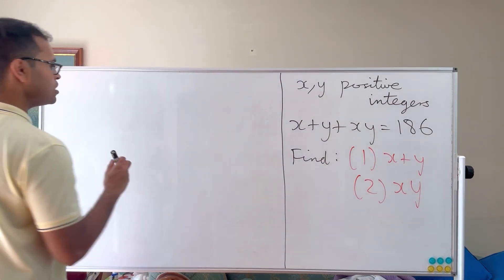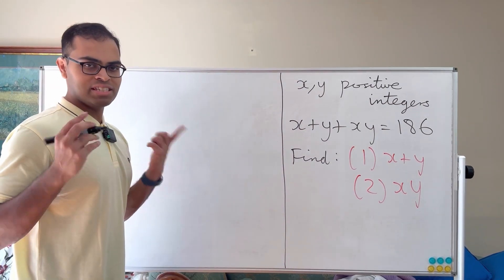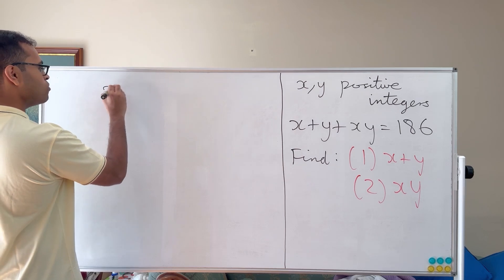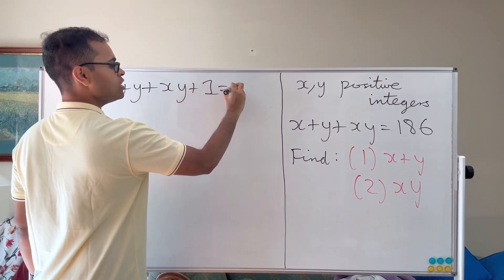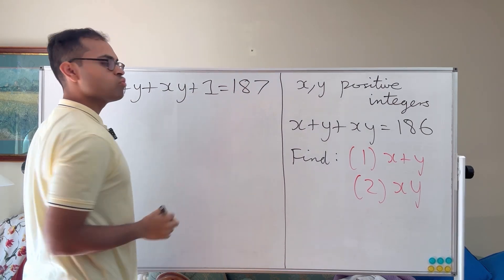So what we're going to do is the following very simple, deceptive trick. We're just going to add one to both sides of the equation. We're going to say x plus y plus xy plus 1 is equal to 186 plus 1, which is just 187.